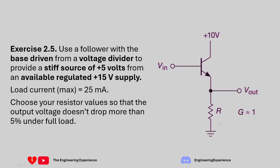The emitter follower circuit is shown on the screen now. You can see the input voltage is coming in from here. The question says we need to drive this input with a potential divider. The power supply is 15 volts connecting here and our output voltage is over here. We can have the load connected directly here, or as a resistor going from V-out to ground. For the calculation and the circuit I'm going to design, I'm going to replace R with the load resistor.